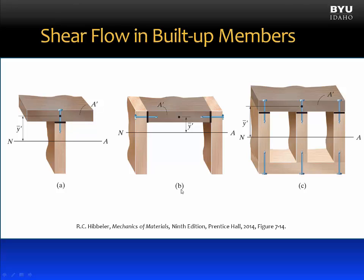Beam B is composed of three parts, and we can see there are two fasteners at a given cross section. For the Q equation, we use for A-prime the shaded area, and Y-bar-prime is the distance from the neutral axis to the centroid of A-prime. In beam C, the cross section is composed of five pieces. For the top piece, to evaluate shear flow at the joint connecting it to the rest of the member, we use the shaded area for A-prime.